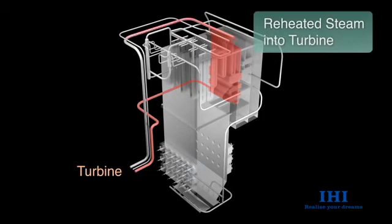The reheated steam is sent to the intermediate and low-pressure steam turbines through the hot reheat pipe. The steam used by the intermediate and low-pressure steam turbines is condensated by the condenser, and the cycle is complete. The water is reused as boiler feed water.